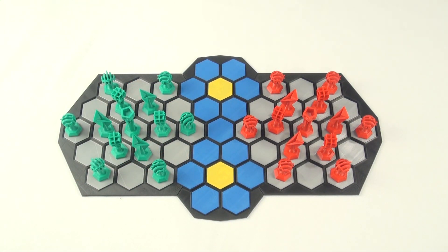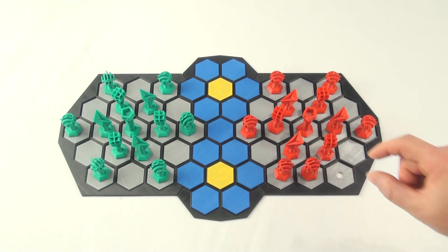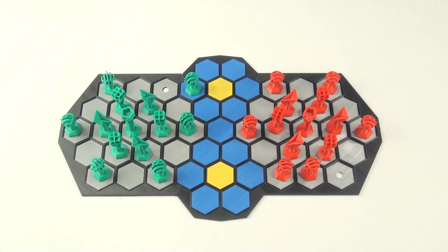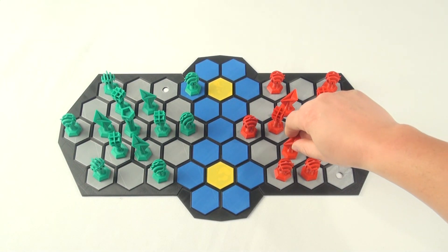This time red is going to start out by bringing a circle forward from the rear. Green is taking a more confrontational approach and pushes towards one of the objective hexes. Red takes this moment to capture the other objective hex.